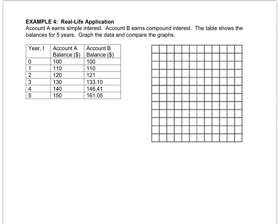Last one together, account A earns simple interest, and account B earns compound interest. Simple interest and compound interest are just different types of interest that come when you open a bank account. Typically, it's compound interest. I don't really know any banks that give simple interest, but simple interest is much easier math, so that's really the one that you've dealt with so far. The table shows the balance for five years. Graph and compare the data.